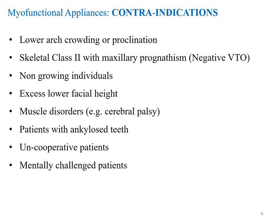Regarding contraindications: if there is lower arch crowding or presence of proclination, it is contraindicated. It is also contraindicated in Class 2 skeletal cases with maxillary prognathism, which is a negative VTO, non-growing individuals, excess of lower anterior facial height, muscle disorders such as cerebral palsy, and patients with ankylosed teeth. As these appliances require a lot of compliance and cooperation, uncooperative patients and patients who are mentally challenged and cannot control their bodily actions are also contraindicated.